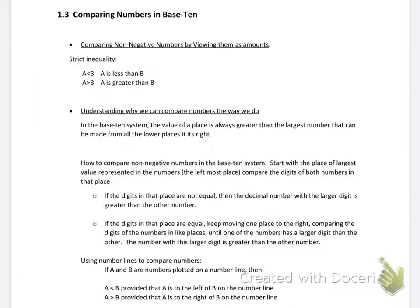This video only touches the surface of these concepts, so I encourage you to look at the class activities as well, since these are very fundamental concepts. There will be a homework packet covering chapters one and two. Comparing non-negative numbers by viewing them as amounts: a strict inequality means no equal sign — for example, five is less than seven, or seven is greater than five.